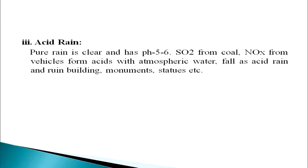Next is acid rain. Pure rain is clear and has pH 5.6. Sulfur dioxide from coal and oxides of nitrogen from vehicles form acids with the atmosphere. This falls as acid rain and ruins buildings, monuments, statues, etc.